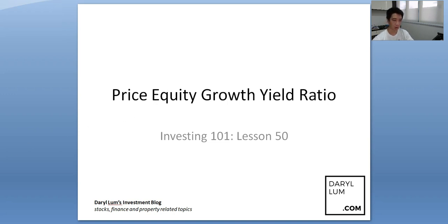Please note that all these ratios — you're supposed to calculate the ratio and then use them in relation to another counter. That means if you're deciding between stock A and B, or you want to see within a basket of stocks — like maybe 10 stocks — which one is more attractive and you can't decide, then these are the ratios you have to use.